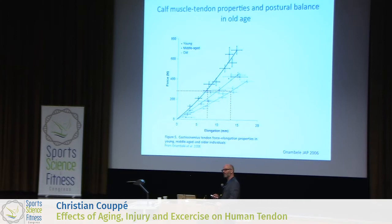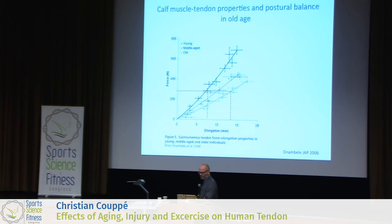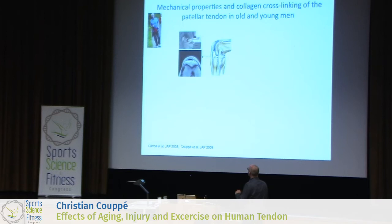This led us to speculate about what could explain this. One thing they didn't really control for in this study was physical activity level. We know that with age we lose activity level, and that could have influenced the data — perhaps they had lost some strength. There are also some methodological issues regarding how deformation was measured, but we can discuss that another time.